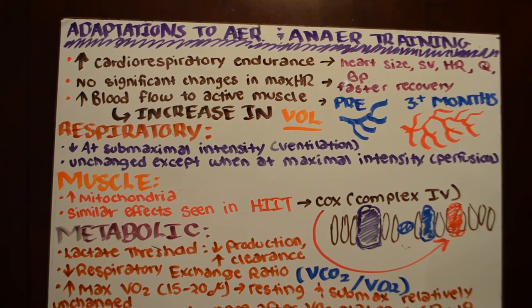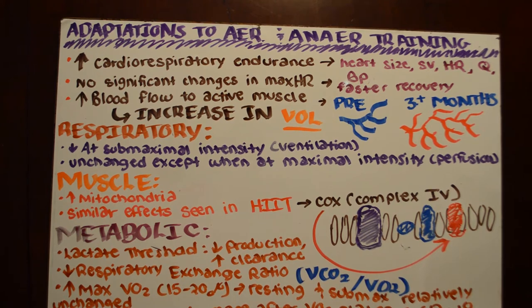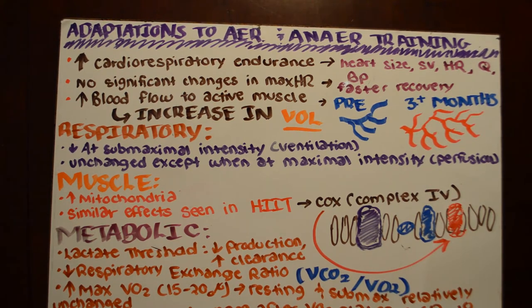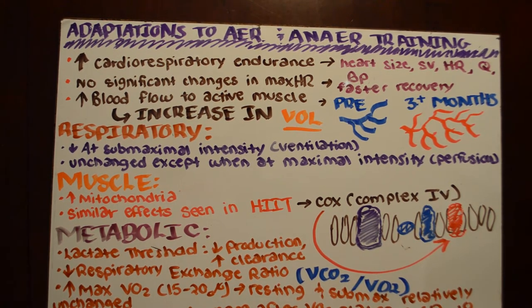There are no significant changes in your maximum heart rate — whatever your max heart rate is, usually the highest it gets is around age 20 for the majority of your life. What we do see is an increase in faster recovery. People who run track — after their first 100-meter dash they're exhausted for like two minutes, but after doing it for a few years the recovery might be 45 seconds or so. That's what we mean by faster recovery.